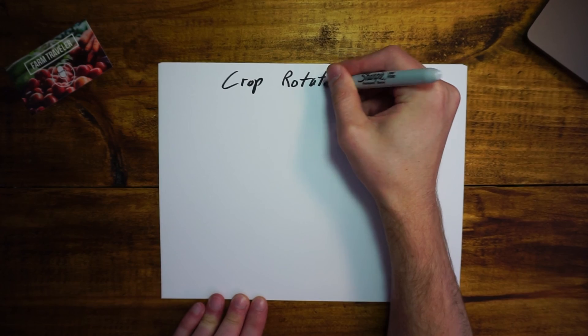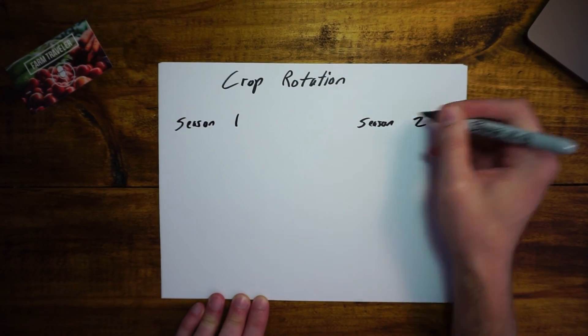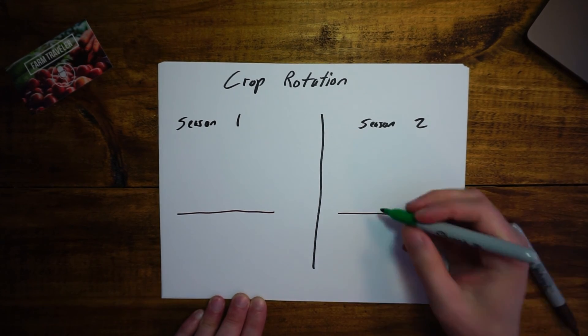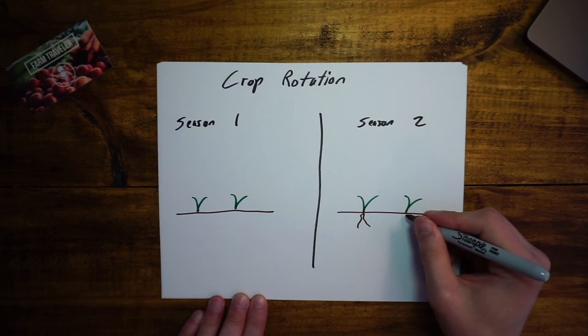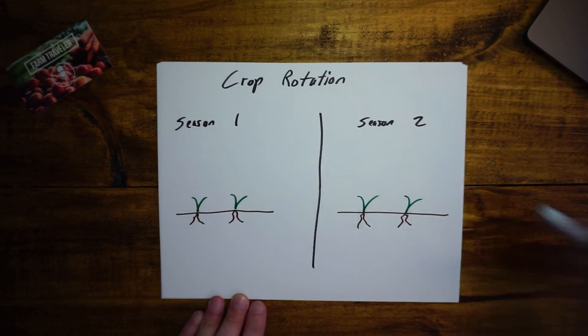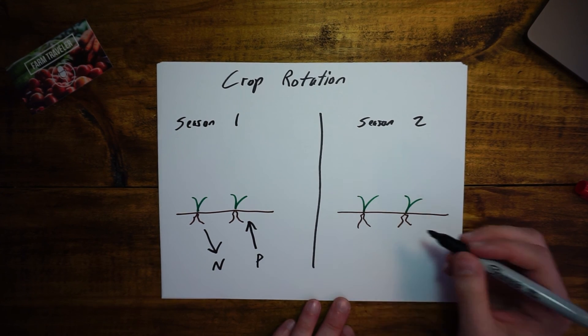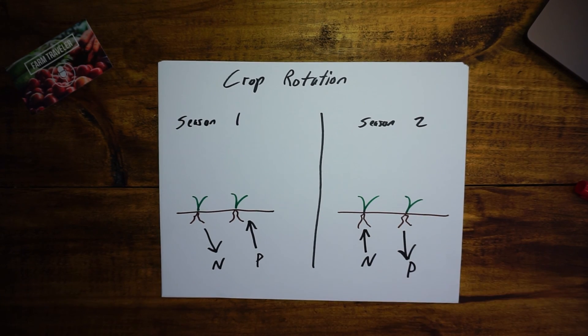Another one is crop rotation, which is the growing of different crops in the same area at different times. This increases soil health as many plants use different mixes of nutrients in the soil. Rotating crops helps maintain an even amount of nutrients, which is key for plant health. For example, if one crop releases nitrogen into the soil and takes up phosphorus, the next crop should release phosphorus and take up nitrogen, to balance the amount of nutrients in the soil.